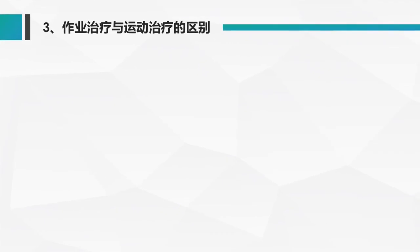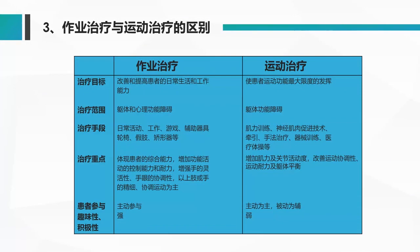作业治疗和运动治疗是不同的，有一定区别。首先，在治疗目标上：作业治疗的治疗目标是改善和提高患者的日常生活工作能力；而运动治疗的治疗目标是让患者最大程度地发挥自己的能力。在治疗范围上：作业治疗的治疗范围主要是躯体和心理的功能障碍；而运动治疗的治疗范围主要是指躯体的功能障碍。